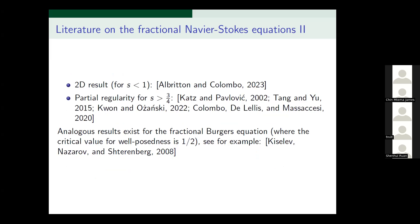This type of result — studying a given PDE and varying the exponent on the dissipation — has also been done for the fractional Burgers equation, where the critical value for well-posedness is one half; one example is a work by Kiselev, Nazarov, and Shterenberg. There also exist such results for the surface quasi-geostrophic equations.